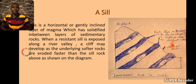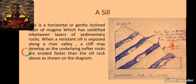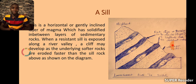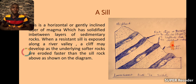Sills are horizontal or gently inclined layers of magma which solidify in between layers of sedimentary rocks. They are different from dikes in that sills are more horizontal or gently inclined while dikes are more vertical. When a resistant sill is exposed along a river valley, a cliff may develop as the softer rock erodes faster. This may result in the formation of a waterfall, because the sill provides a ledge for water to plunge over while the softer sedimentary rock is worn out, forming a pool where the water drops.